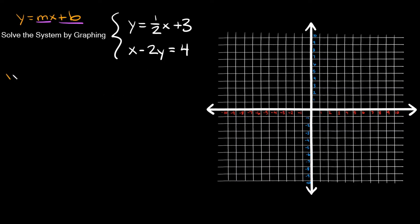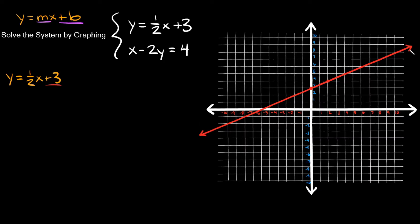Let's graph both equations. The first one, y equals one-half x minus three, is already in slope-intercept form. The y-intercept is positive three — plot a point there. The slope is one-half, so rise one and run two. Go up one and over two to find the second point, then draw a straight line.